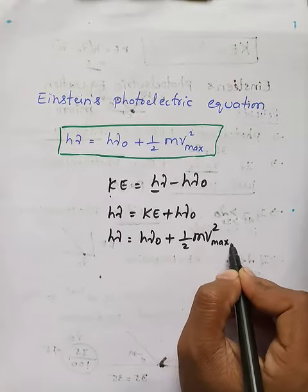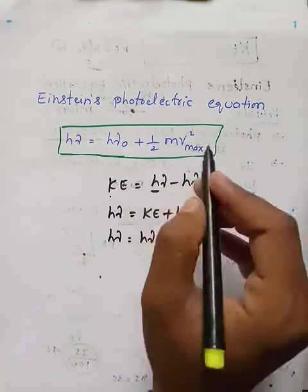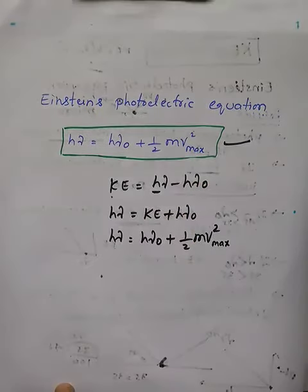v maximum means maximum velocity. This is Einstein's photoelectric equation, the final equation.